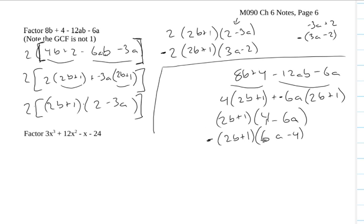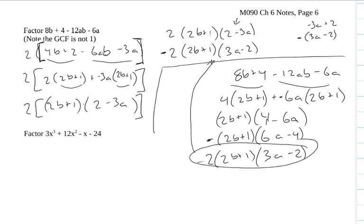So not only do I want to take the negative out of there, I also want to take a 2 out of there. So I'm going to factor 2 out of this, leaving 3a minus 2. And you can see that's exactly the same as what we would have gotten up here.